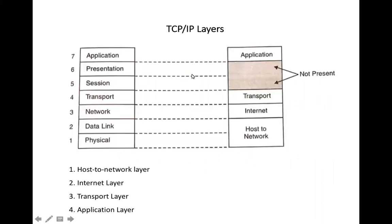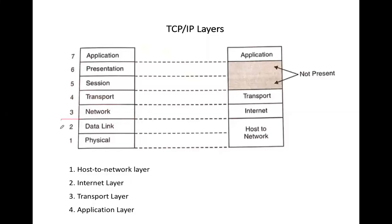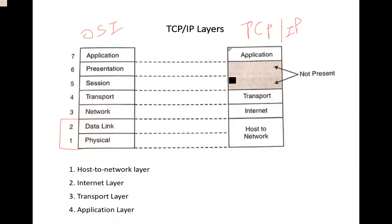Now, talking about the layers of TCP/IP: the TCP/IP model has four layers — host-to-network, internet, transport, and application. You can observe in the diagram that the OSI model has seven layers while TCP/IP has four layers. The bottom two layers of the OSI model are merged into a single layer in TCP/IP, which is called the host-to-network layer.